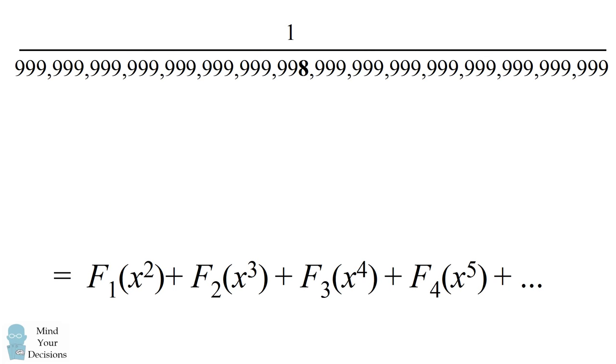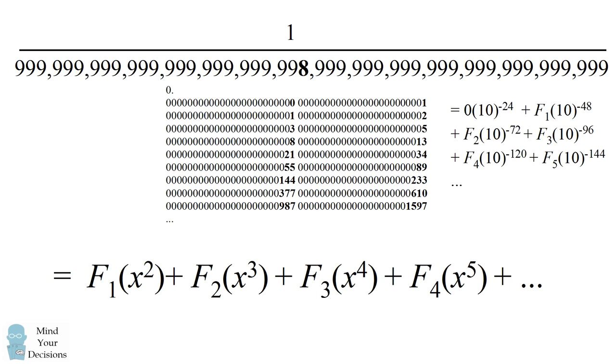In other words, we figured out that this crazy fraction is equal to the following infinite series. If we write this using x = 10^(-24), we end up with the following expression. So this means every 24 terms, we're going to get a new Fibonacci number. And that's exactly what we had at the beginning. So that's why we end up with this crazy representation.